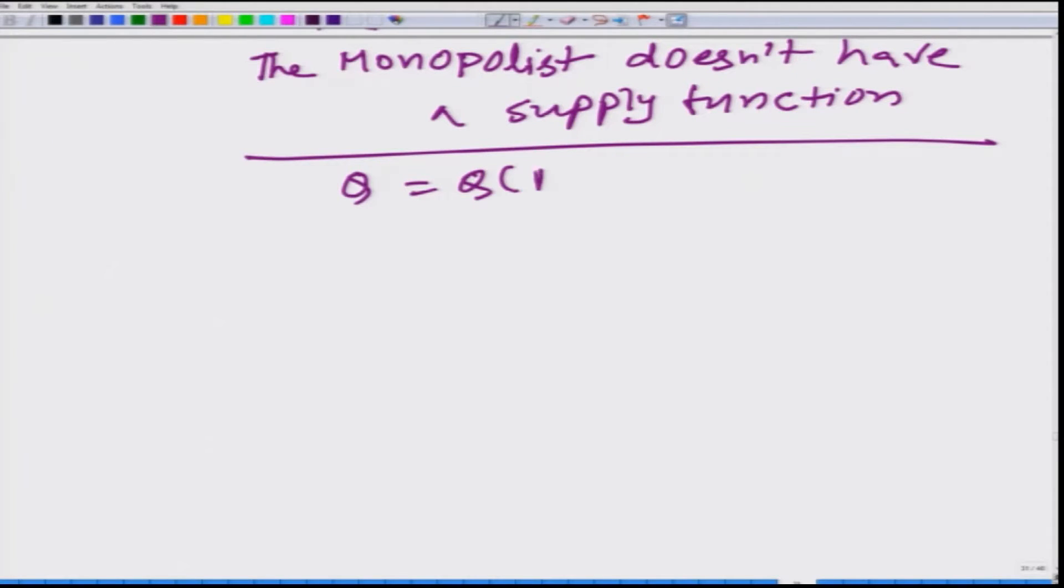What we get is Q as a function of price. Basically from here we obtain the supply function. And it is very clear if you remember the derivation - what we had was that MR is equal to MC.